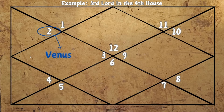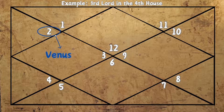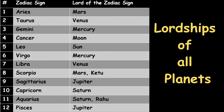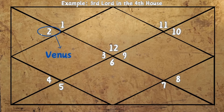Let us try to understand that with an example. If in your chart the third lord is in the fourth house, you look at the first house where twelve is written, the second house where one is written, and the third house where two is written. Two is the Taurus zodiac sign, and the lord of Taurus is Venus. So the lord of the third house is Venus, and if Venus is placed in the fourth house, then the third lord is in the fourth house.